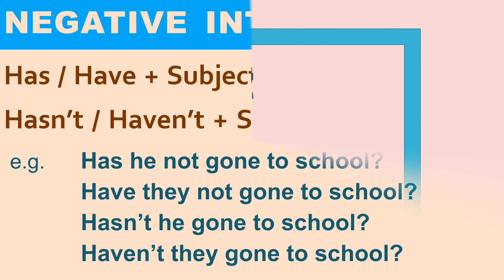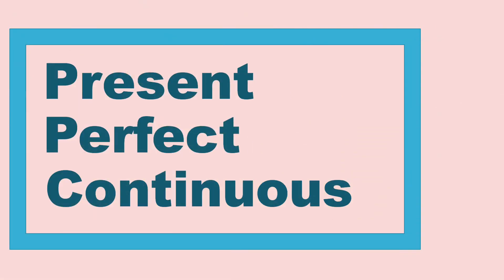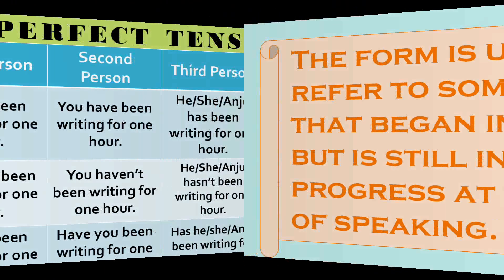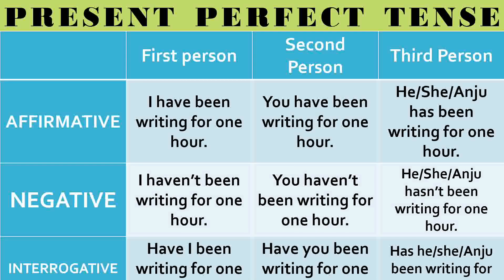Now see the next tense — present perfect continuous tense. This tense is used to refer to something that began in the past but is still happening or still in progress at the time of speaking. For example, 'I have been reading Gulliver's Travels for the last one week' means I started reading in the past but I am still reading the book. The structure uses have been or has been, with the first form of the verb plus ing, and you also add since or for for the expression of time.